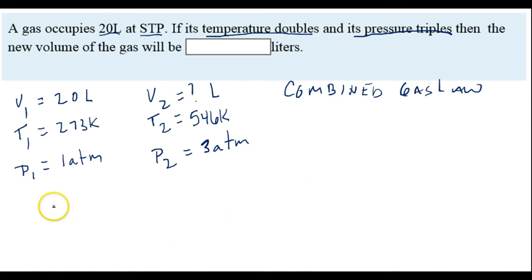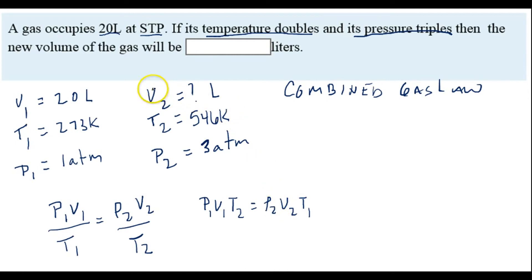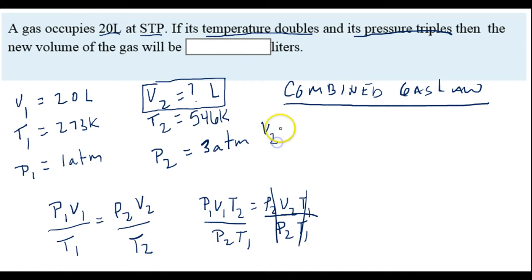The combined gas law states that P1 times V1 over T1 equals P2 V2 over T2. If we cross multiply, we get rid of the fractions and end up with P1 V1 T2 equaling P2 V2 T1. We're trying to find V2, so we divide both sides by P2 and T1. The formula we'll use is V2 equals P1 V1 T2 all over P2 T1.